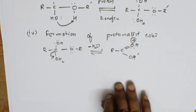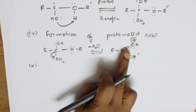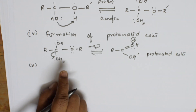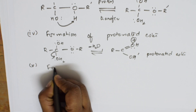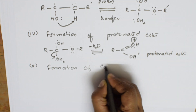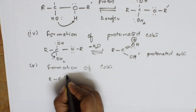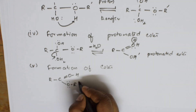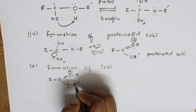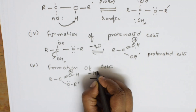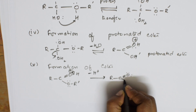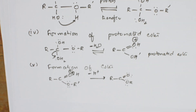Step 5: The protonated ester loses a proton (H⁺) to form the final ester. The protonated ester R-C(=OH⁺)-OR' loses H⁺, the bond shifts, and we get R-C(=O)-OR' — our ester is formed. H⁺ is regenerated as a catalyst. This completes the esterification mechanism.